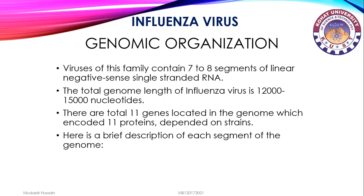Regarding the genomic organization of influenza virus: viruses of this family contain seven to eight segments of linear negative single-stranded RNA. The total genome length is 12,000 to 15,000 nucleotides. There are a total of 11 genes located in the genome encoding 11 proteins, dependent on strain.